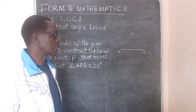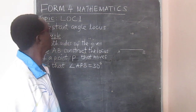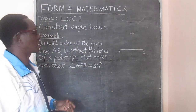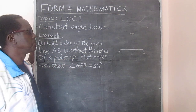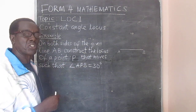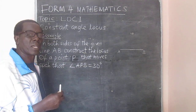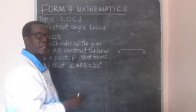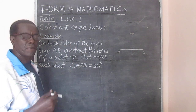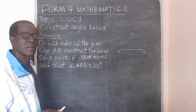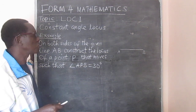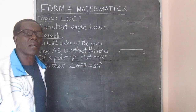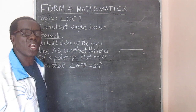Welcome to my mathematics class. Today we are going to look at a topic in form 4. This is a continuation of what we had started last time on loci. We have looked at the different types of loci, but today we want to concentrate on the constant angle locus.